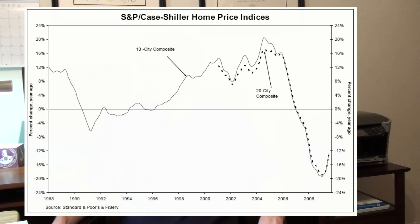Overleveraged homeowners began to default on payments and enter foreclosure. As borrowers defaulted, the pass-through payments to mortgage-backed securities declined.